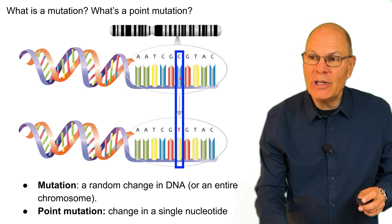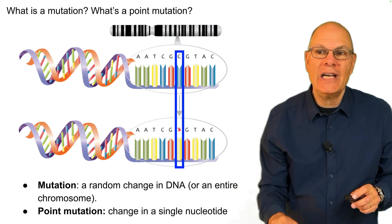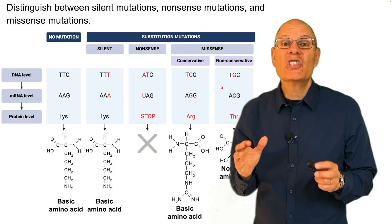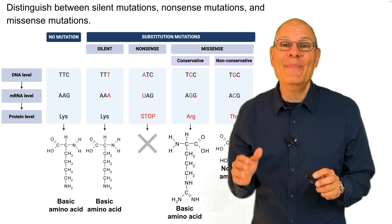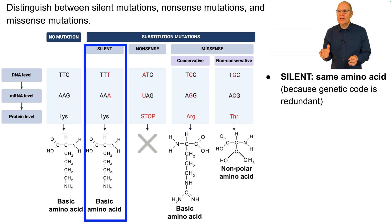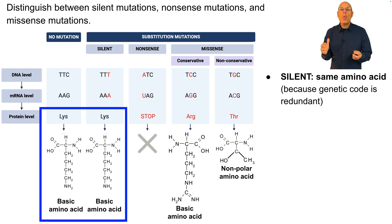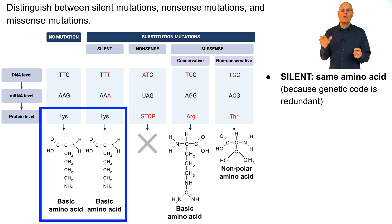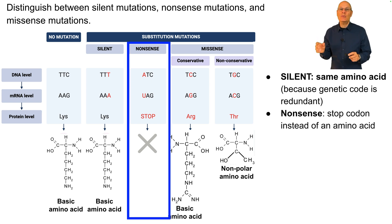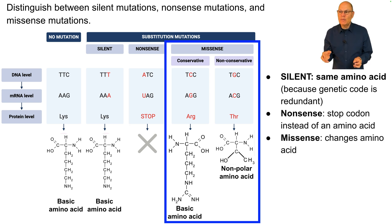You see that here with the nucleotide C mutating to the nucleotide T. Silent mutations are mutations that result in the same amino acid being coded for — the DNA changes, but the amino acid in the protein doesn't. Why? Because the genetic code is redundant, with many codons coding for the same amino acid. A nonsense mutation is a mutation that inserts a stop codon instead of an amino acid.